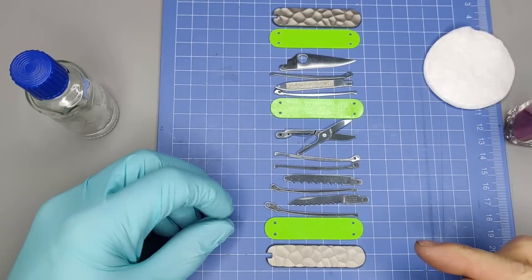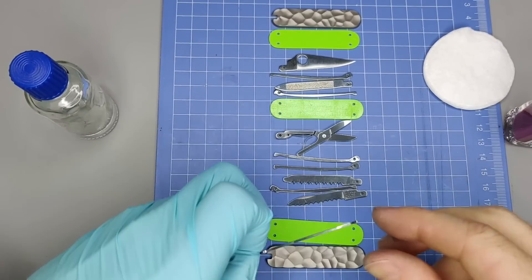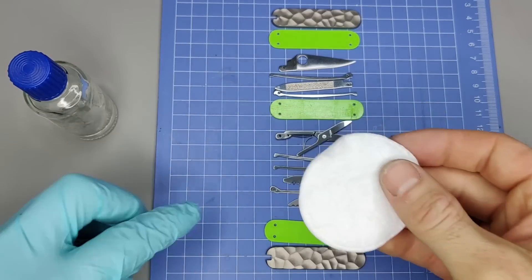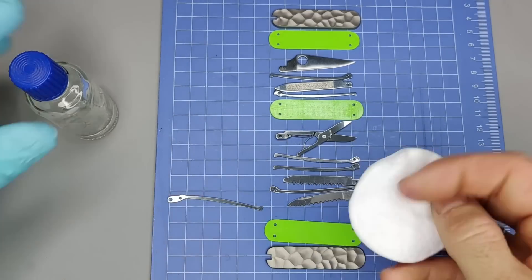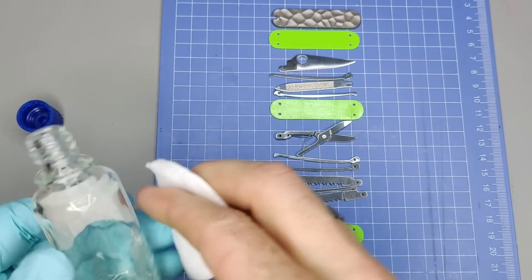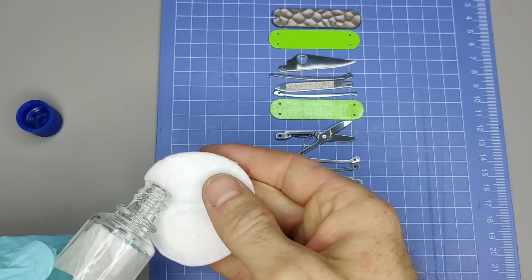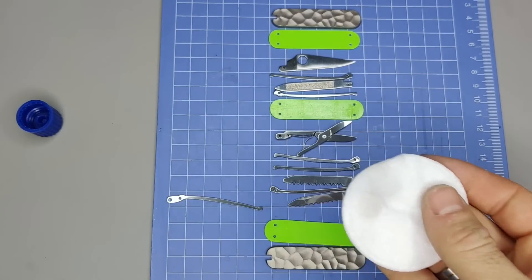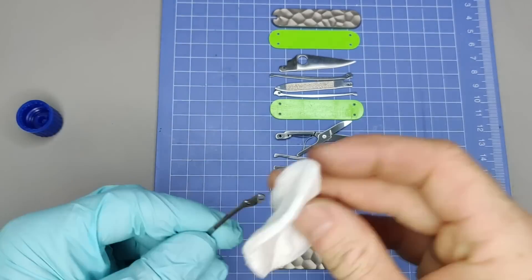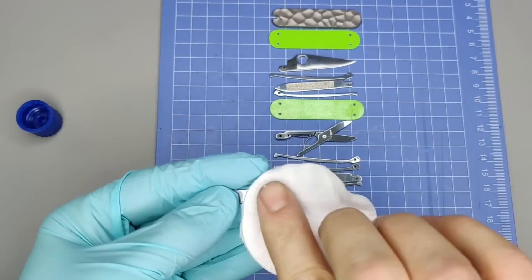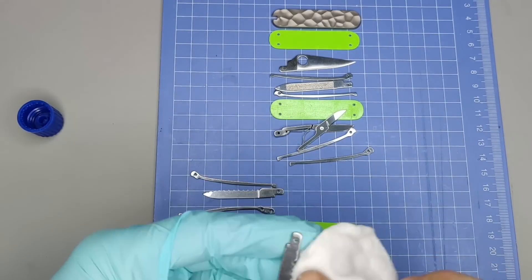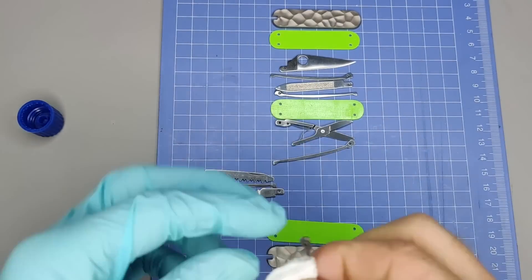Alright, and then I need to basically degrease all the parts. And so what I'm going to use is just this cotton disc and some acetone. And just kind of wipe these down.